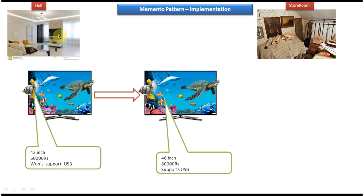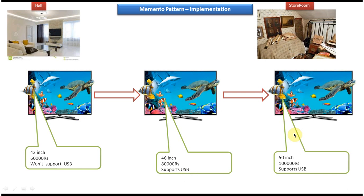After some point of time I think, let me buy a 50-inch LED TV which costs 1 lakh rupees and it supports USB. So I buy this 50-inch LED TV. Then I have to place it in the hall. But in the hall the 46-inch LED TV is there. So I have to take the 46-inch LED TV from the hall, put it in the store room, and place the 50-inch LED TV in the hall.